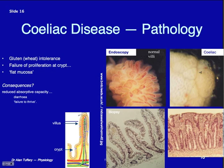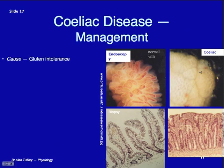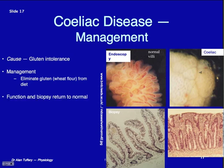Treatment: withdraw wheat flour from the diet — eliminate it completely. Not easy: we eat a lot of cakes, bread, and biscuits. But you eliminate it. You then get normal function and normal biopsy returns. This gives what I like to think of as a natural control experiment: you stimulate the response, withdraw the stimulus, and the response goes away again. It's been demonstrated many times. All down to one defect: you cannot proliferate sufficiently in those cells.